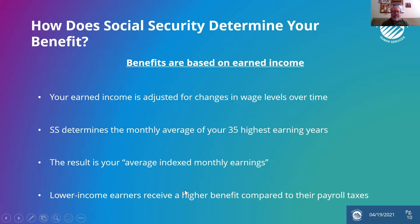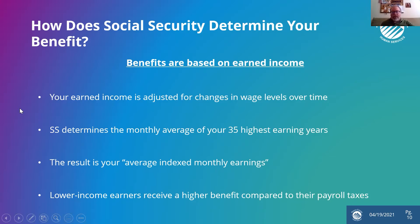The result of this calculation is your average indexed monthly earnings. Lower income earners receive a higher benefit compared to their payroll taxes. When there's discussion about changes to Social Security, a lot of elected officials don't fully understand how the legislation has been implemented over the years. Sometimes they'll say things like, 'let's just make an adjustment so everybody gets more,' but that's going to impact the solvency of the system and calculations going forward. It's a very complex system, and there are certain safeguards built in so it doesn't become too lopsided.